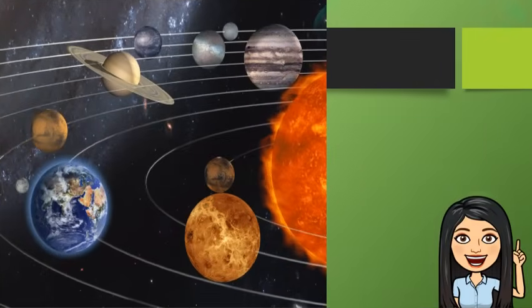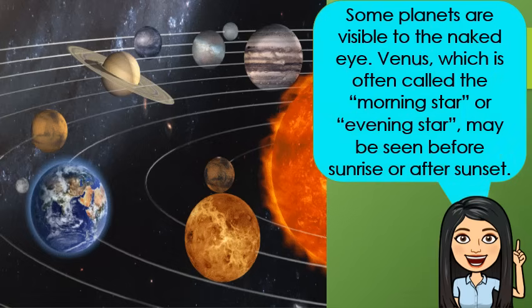Let's tackle the planets. Some planets are visible to the naked eye. Venus, which is often called the morning star or evening star, may be seen before sunrise or after sunset. This is Venus.